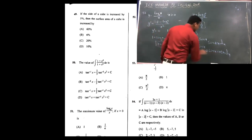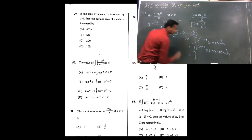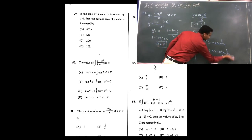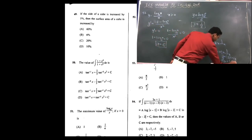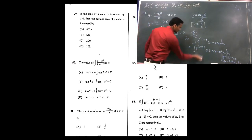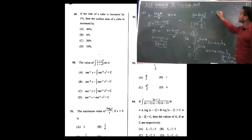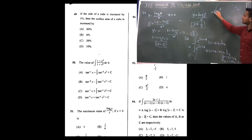Let sin x equals to t. If sin x equals t, then dt equals cos x dx. So e raised to sin x becomes e raised to t. The integration of e raised to t, where 2 is constant, sin x value is t, and cos x dx value is dt.